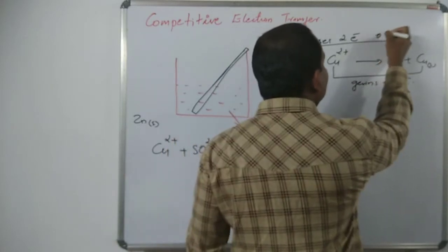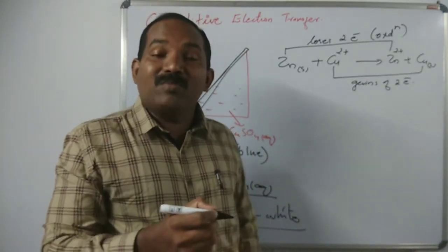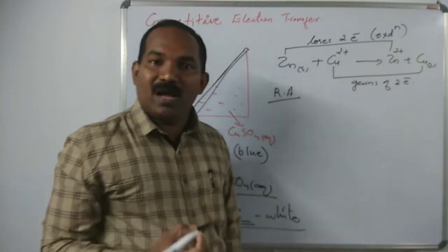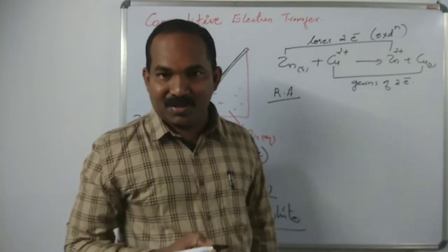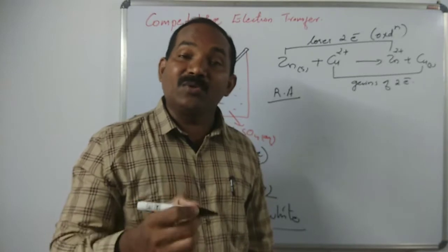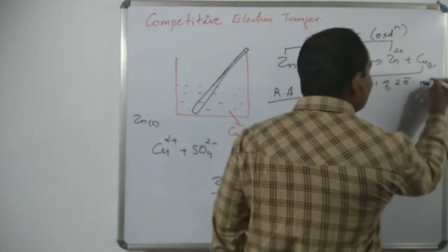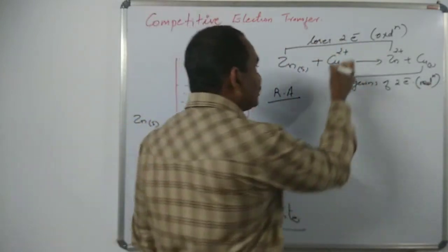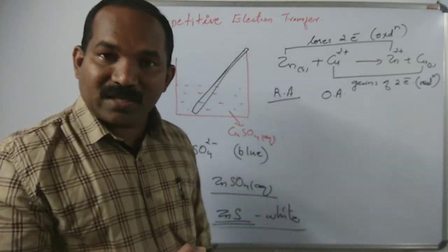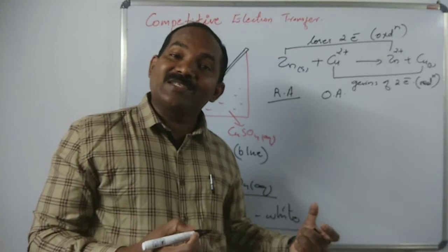Here, zinc loses its electrons — that is oxidation. According to the electronic concept, losing of electrons is oxidation, so zinc is a reducing agent. Reducing agent gets oxidized. Copper²⁺ ion gains two electrons — that is reduction. Copper²⁺ ion is therefore the oxidizing agent. Loss of electron is oxidation; gain of electron is reduction. Reducing agent gets oxidized; oxidizing agent gets reduced.